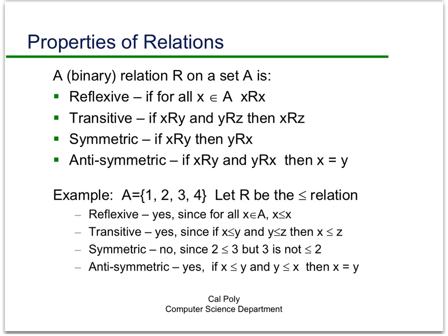Let's look at the less-than-or-equal-to relation on A = {1, 2, 3, 4}. Is it reflexive? Yes — x ≤ x for all x in A. Is it transitive? Yes — if x ≤ y and y ≤ z, then x ≤ z, as learned in grade school. Is it symmetric? No — 2 ≤ 3, but 3 is not ≤ 2, so you don't get both orderings in the set of ordered pairs. Is it anti-symmetric? Yes — if x ≤ y and y ≤ x, then x must equal y.